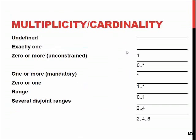Multiplicity and cardinality work like this: without any numbers, it's just an association or relationship between two objects. One number means exactly that many instances, and zero-to-star means zero or more.